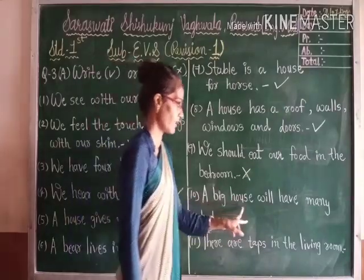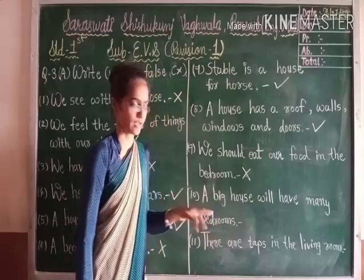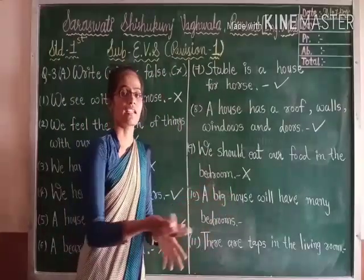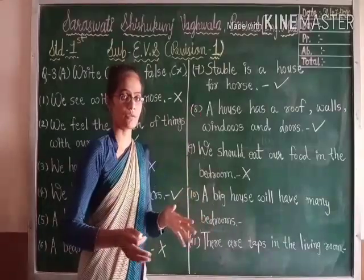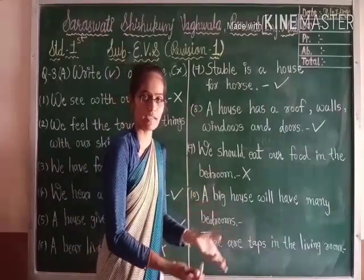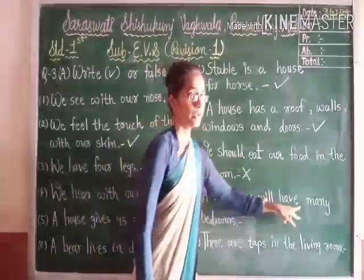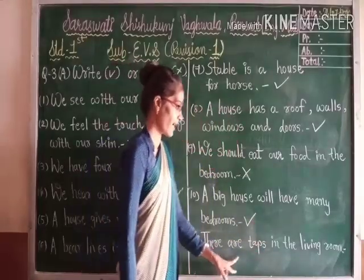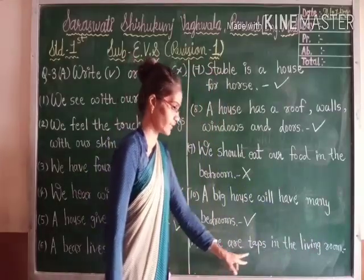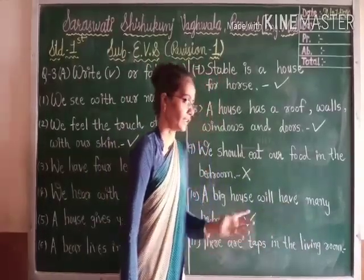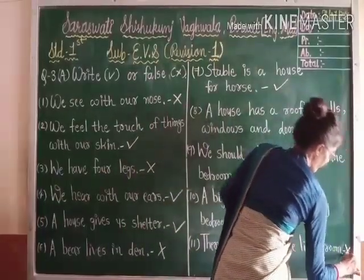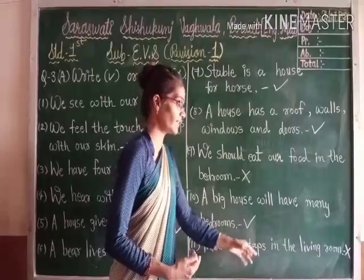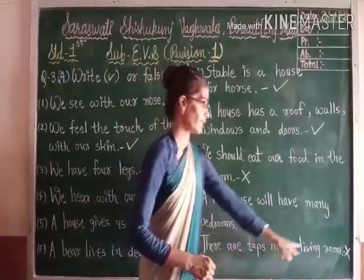Number 10: a big house will have many bedrooms. Yes, if it is a big house, there are many bedrooms inside — 2, 3, or 4 bedrooms — so it is true. Number 11: there are tables in the living room. It is false, because we find tables in the study room or dressing room, not in the living room.